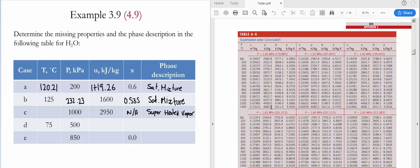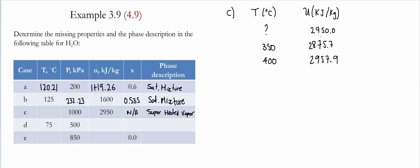Now in the superheated water Table A6, we look for the value of internal energy equal to 2950 at the given pressure of 1 megapascal (1000 kilopascals). Going down the table, we see that the value of 2950 falls somewhere between 350 and 400 degrees Celsius, so we're going to have to interpolate using these values.